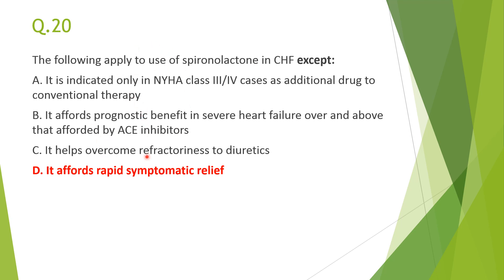Next: following apply to the use of spironolactone in CHF except D — it affords rapid symptomatic relief. Spironolactone prolongs survival but does not afford rapid symptomatic relief. It is indicated only in NYHA class 3 or 4 as add-on therapy to ACE inhibitors and other drugs, not as monotherapy. It provides prognostic benefit in severe CHF and reduces pathological remodeling by antagonism of aldosterone, helping overcome refractoriness to diuretics.